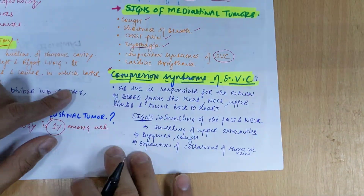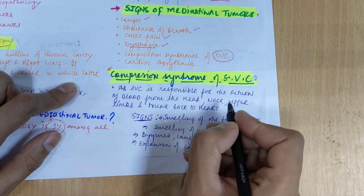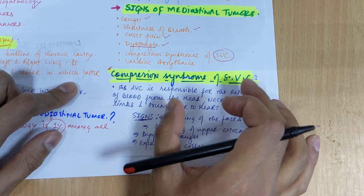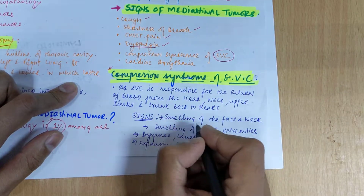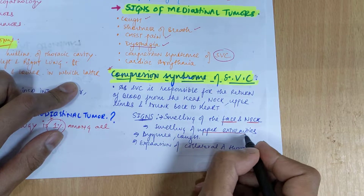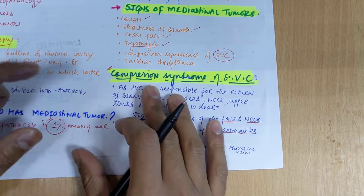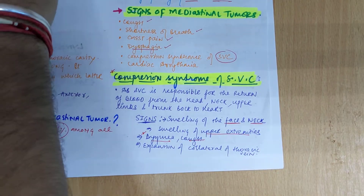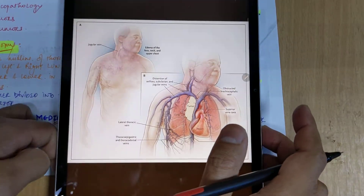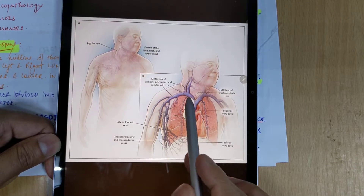The superior vena cava is responsible for the return of blood from the head, neck, upper limbs, and trunk back to the heart. If there is any compression of this vessel, you can see signs of swelling of the face, neck, and upper extremities, and expansion of the collateral thoracic veins. This condition is called superior vena cava syndrome.